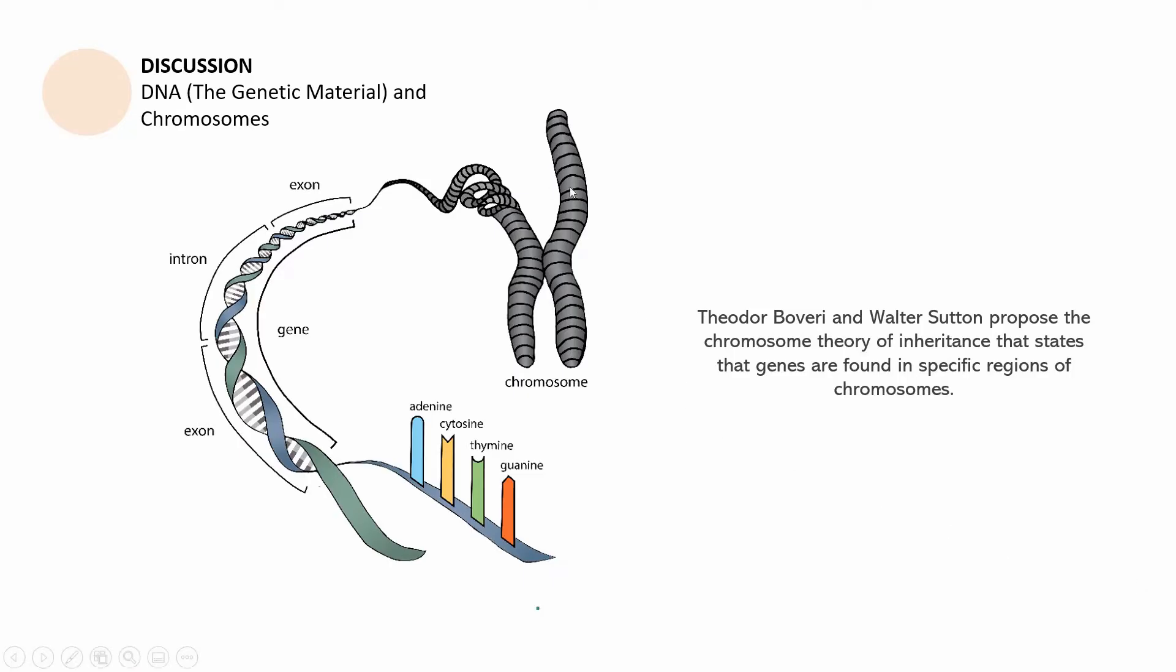The chromosome is this structure right here. This has winding around histone proteins. The strings that wind around those histone proteins are what you call as the DNA. And then some parts of the DNA, they are actually coding for a particular trait and that's what you call as a gene. A gene has these regions, the ends, you call them exons, and those in the middle, you call them introns.